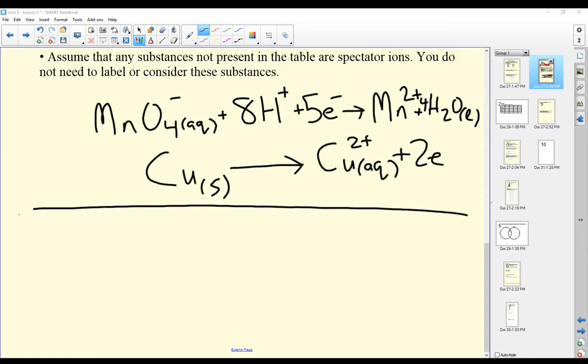Find my common factor. The first one has 5 electrons, the second one has 2 electrons. The common factor is 10, so I'll multiply the top one by 2, the bottom one by 5. Then what we get is...